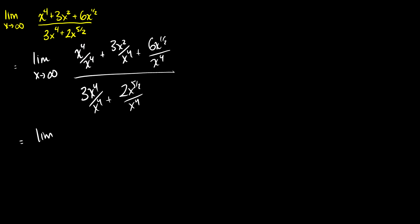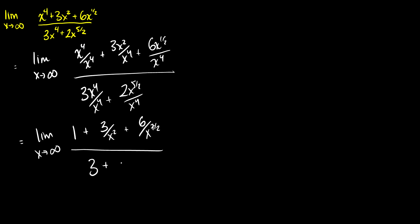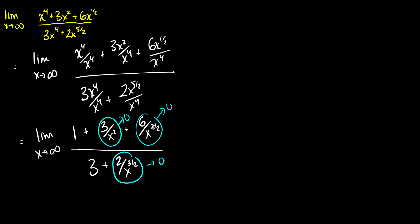Now we can simplify. The limit as x goes to infinity: x⁴ / x⁴ is 1; 3x² / x⁴ is 3 / x²; 6x^(1/2) / x⁴ is 6 / x^(7/2). In the denominator we have 3 plus 2 / x^(3/2). As x goes to infinity, 3 / x² goes to 0, 6 / x^(7/2) goes to 0, and 2 / x^(3/2) also goes to 0. So we're left with 1 on top and 3 on the bottom, giving us a limit of 1/3.